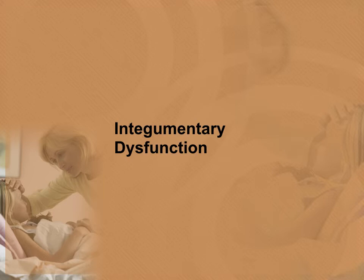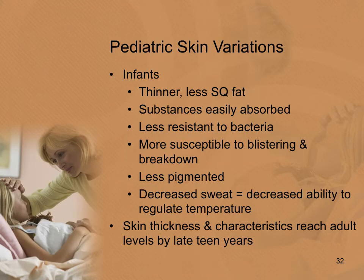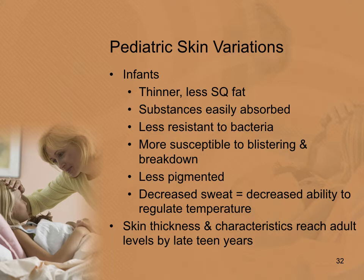This next section focuses on integumentary dysfunction. Pediatric skin variations in infants include thinner skin with less subcutaneous fat, allowing substances to be more easily absorbed topically. Infants are less resistant to bacteria penetrating the skin, more susceptible to blistering and breakdown, have less pigmented skin, decreased sweating efficiency, and thus a decreased ability to regulate body temperature. Skin thickness and characteristics reach adult levels by the late teen years through a slow, gradual process.